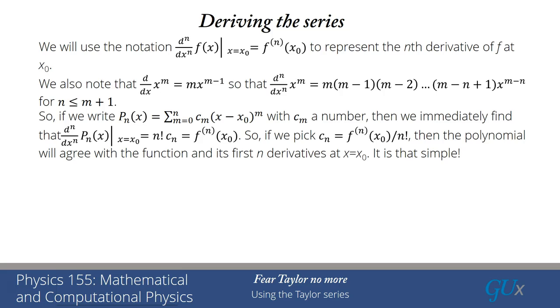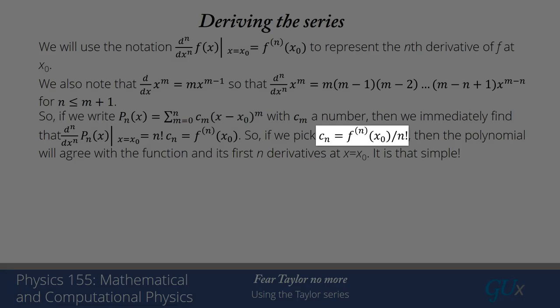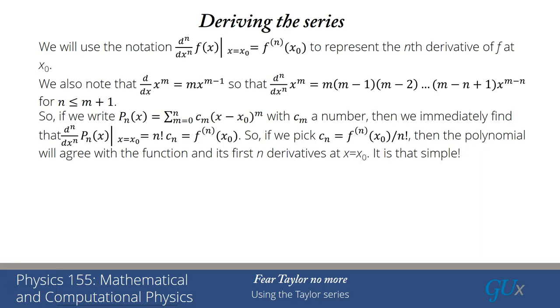And so what we now need to do is we now need to take the derivative of that polynomial. So if I take the nth derivative of that polynomial, I find it's equal to n factorial times cₙ. But the nth derivative has to equal the nth derivative of the function evaluated at x₀. So we learn that if we can pick cₙ equal to the nth derivative of the function f⁽ⁿ⁾(x₀) divided by n factorial, then the polynomial will agree with the function and its first n derivatives at x equals x₀. And that's basically it. That is what a Taylor series expansion is.